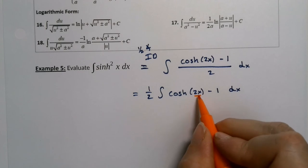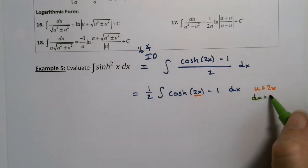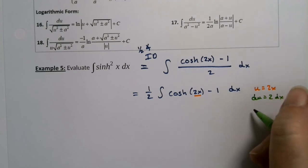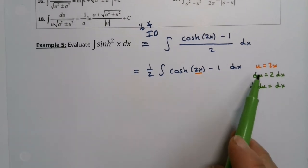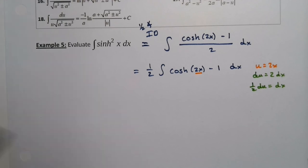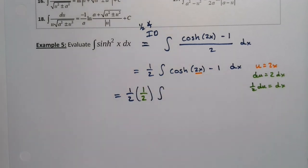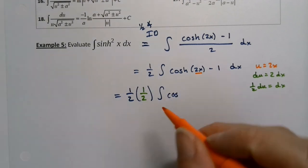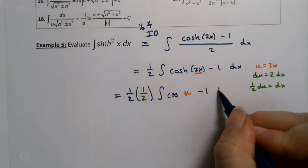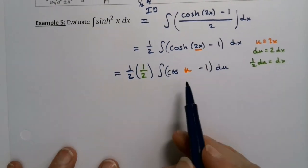This calls for a u-substitution. This is (1/2) · ∫(cosh(2x) − 1) dx — a very basic u-substitution. u is 2x, du is the derivative of that. For ones as basic as this we kind of know how it's going to work. We already have the (1/2) out front and gain another (1/2) to compensate for the 2x, giving us (1/2) · ∫(cosh(u) − 1) du.